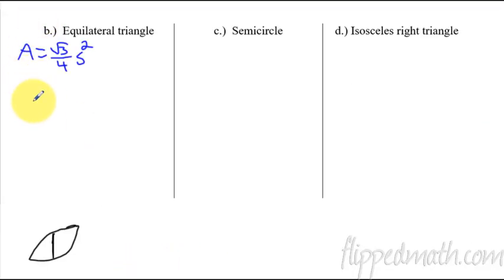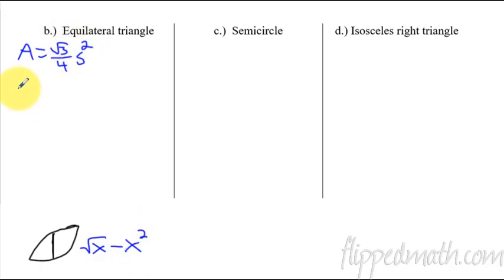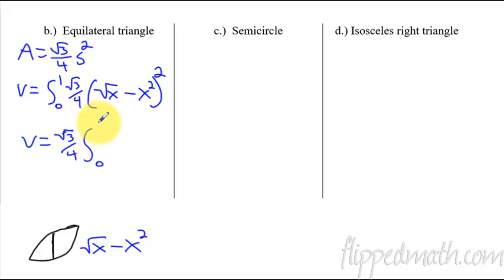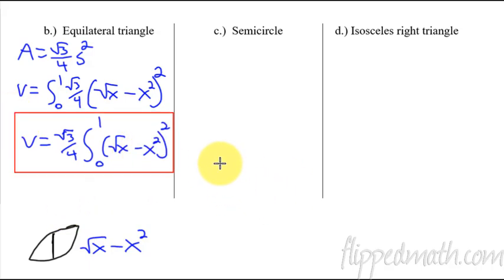Going back to our notes: we need to figure out what S is. We already did — S is square root of x minus x squared. We just plug that in to get the volume. So volume equals the integral from 0 to 1. Notice there's no pi in front — I'm not revolving anything. We have the square root of three fourths times (square root of x minus x squared) quantity squared. That constant can be brought in front of the integral. We're just setting up the integrals to help speed the lesson up.